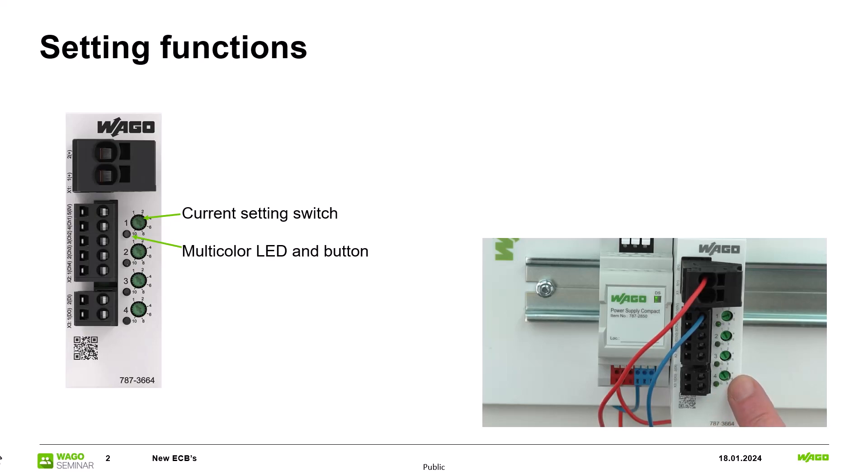The respective rotary switch for setting the trip current are located directly next to this. The rotary switch can be easily used with an operating tool or with a screwdriver.